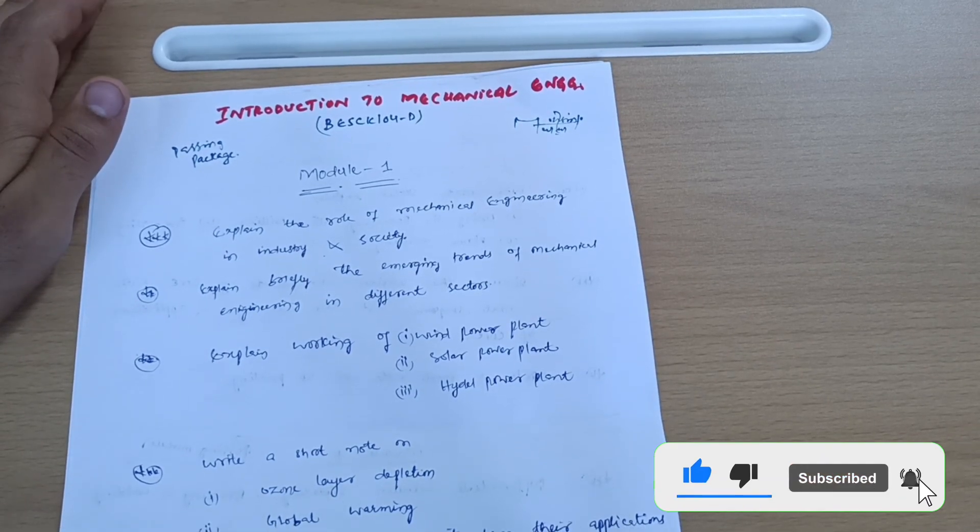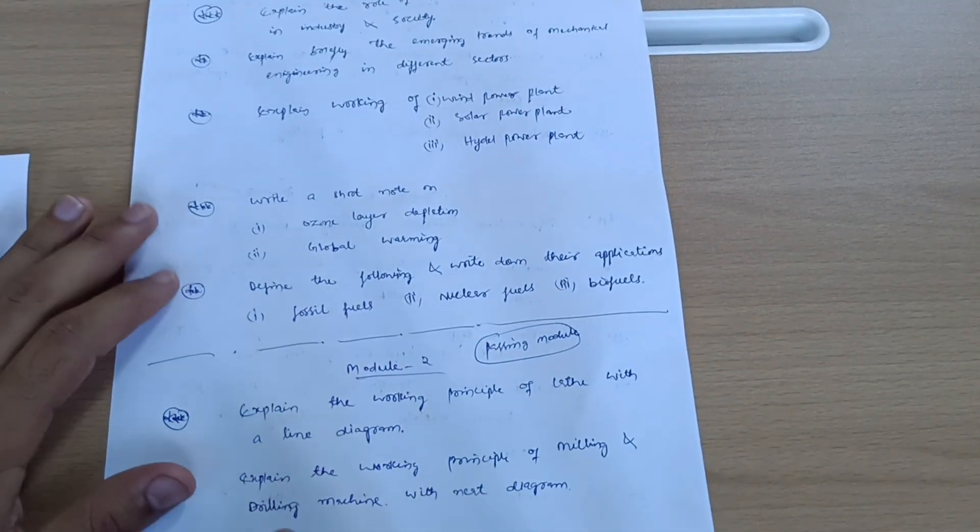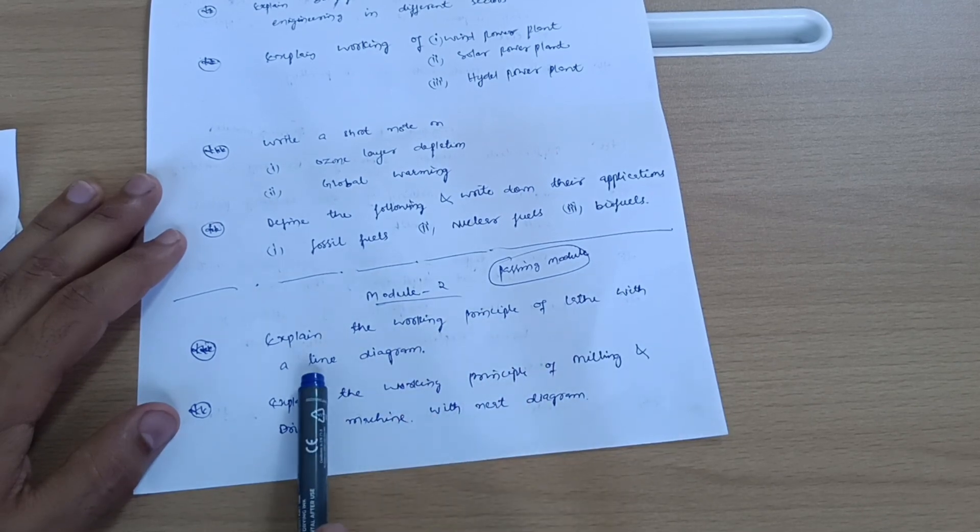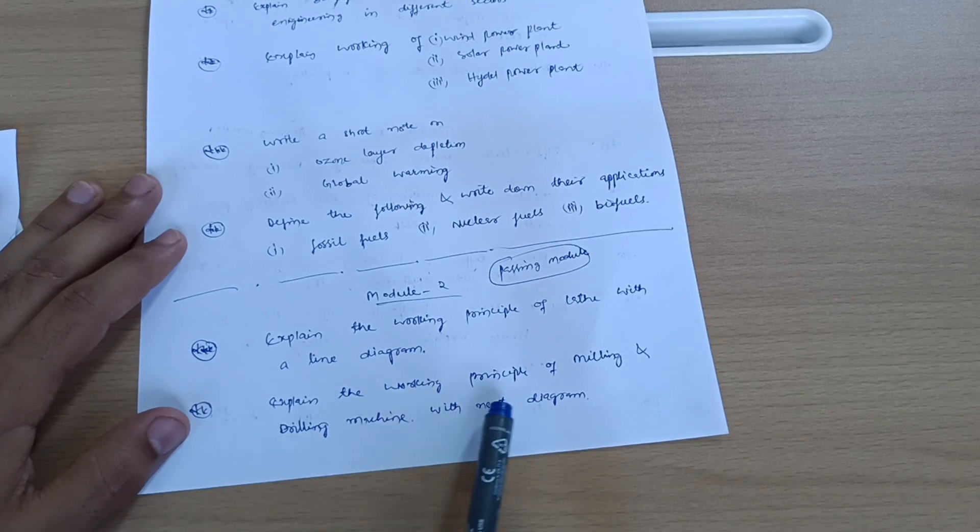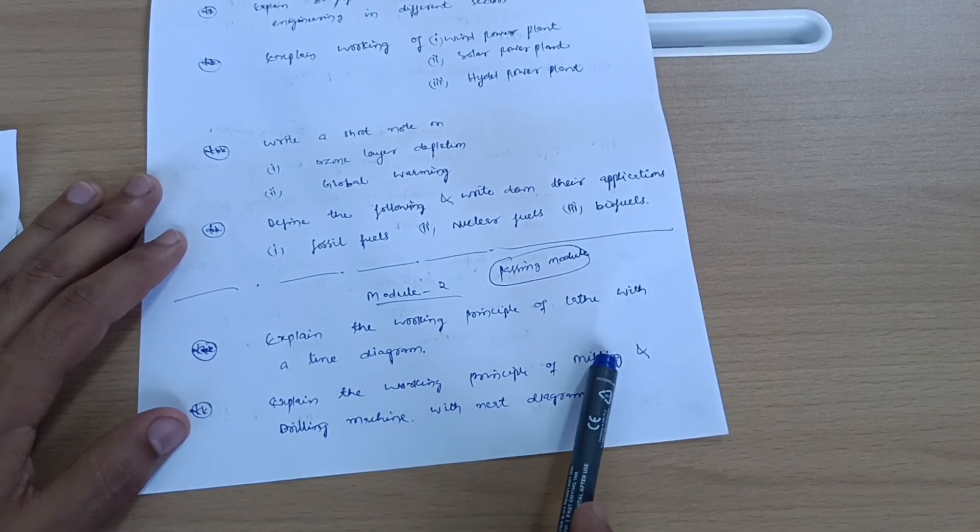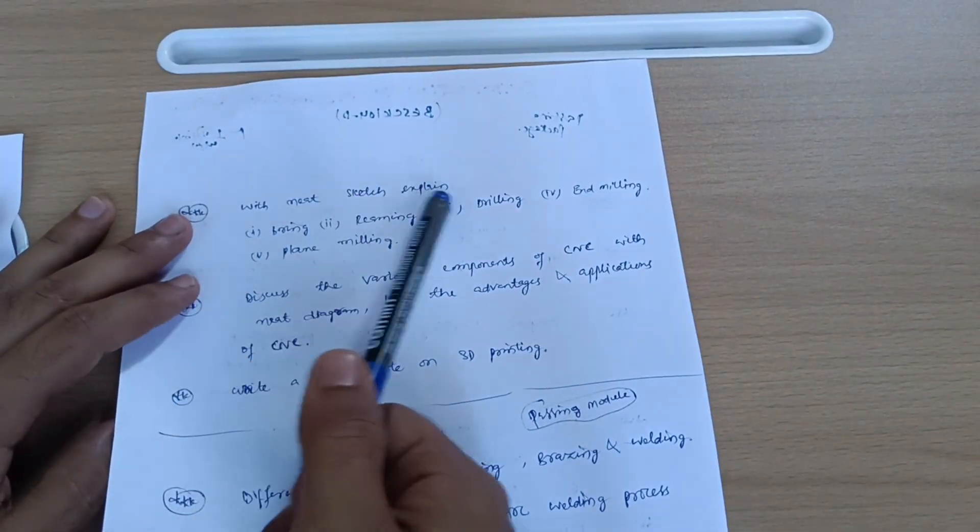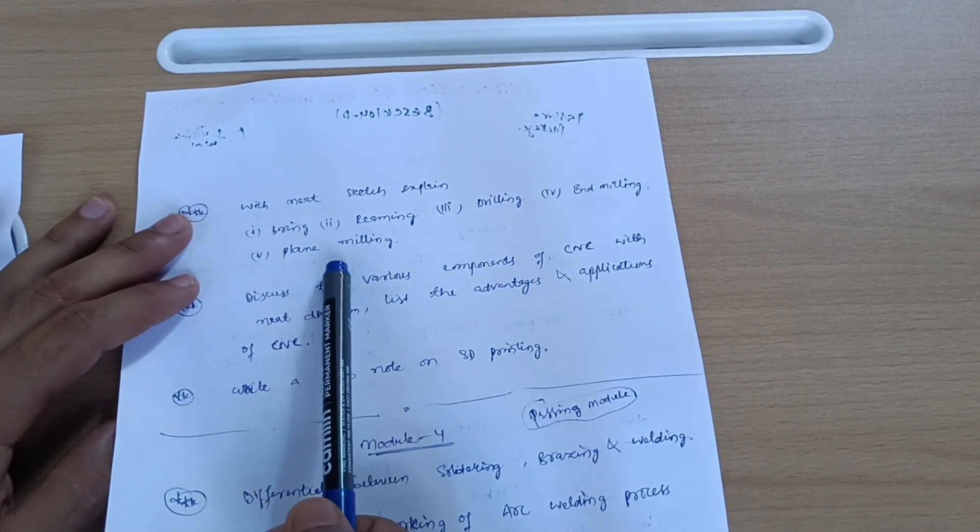First of all, let me discuss the passing modules. Module 2 is a passing module in which you have to cover questions like: explain the working principle of lathe with line diagram, explain the working principle of milling and drilling machine with neat diagram. This may be five marks each, so ten marks total. Next question: with neat sketch explain boring, reaming, drilling, end milling and plane milling.